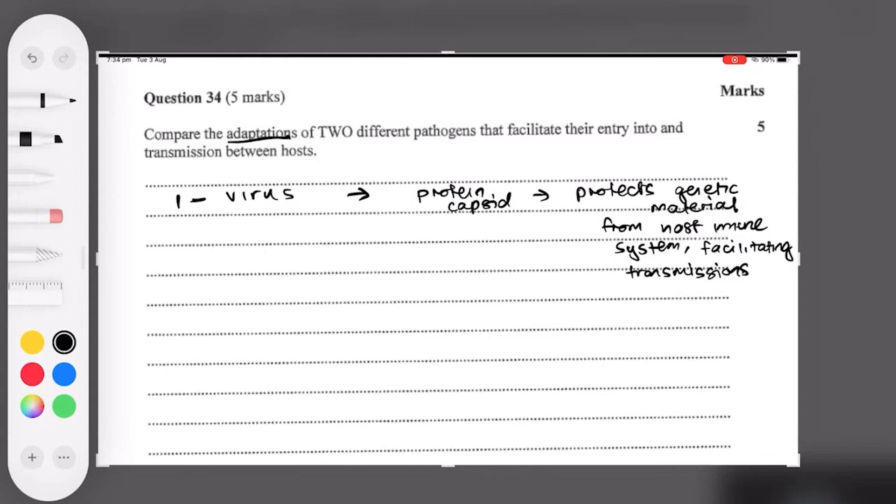Vectors, like mosquitoes, can bypass the skin area by using pathogens to inject into the blood directly. Do mosquitoes need to use pathogens or do pathogens need to use mosquitoes? Mosquitoes inject the pathogen into the blood. So whose adaptation is that? Is it the mosquito's adaptation? Well we're talking about pathogens here, so not vectors.